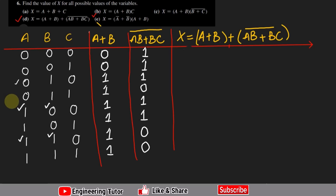From this we can very easily find the output, which is the addition of (a plus b) and (ab plus bc) whole complement. Adding them together we get 0 plus 1 is 1, and all the remaining are 1, so all of them will be 1. That is the answer to part d. We solved it by splitting into sub-parts: first calculating part one, then the second half, then adding them together to get the output.